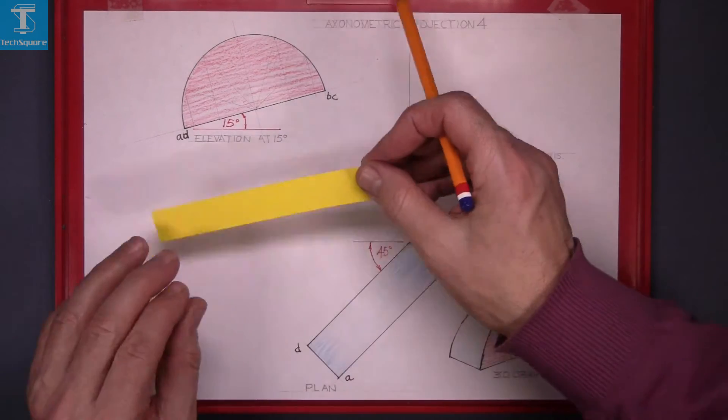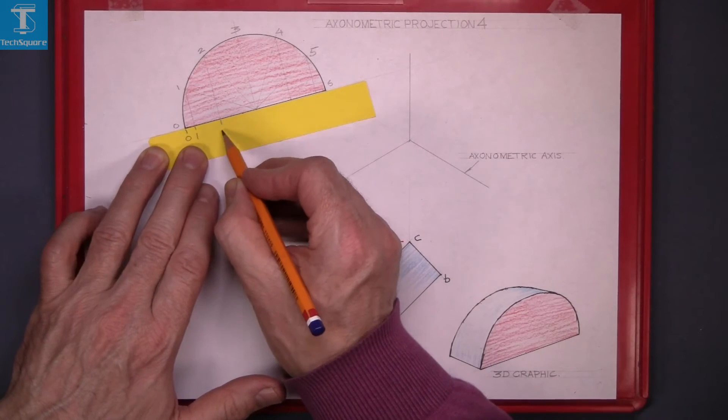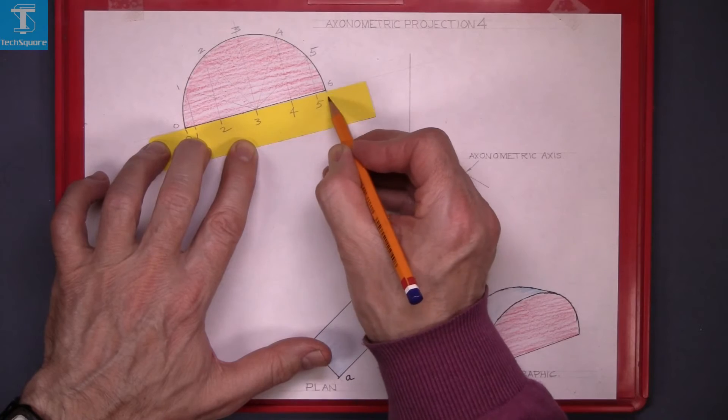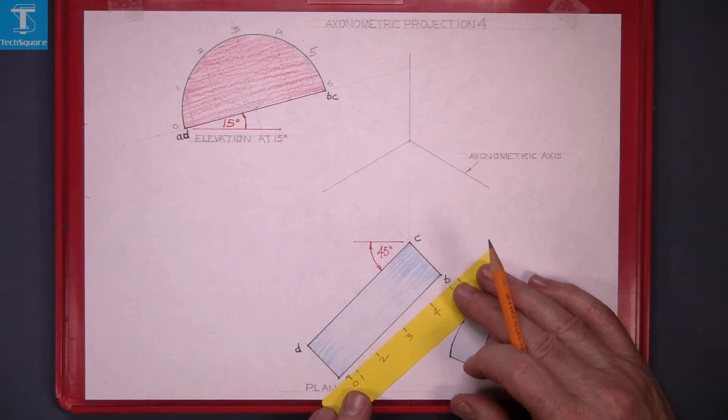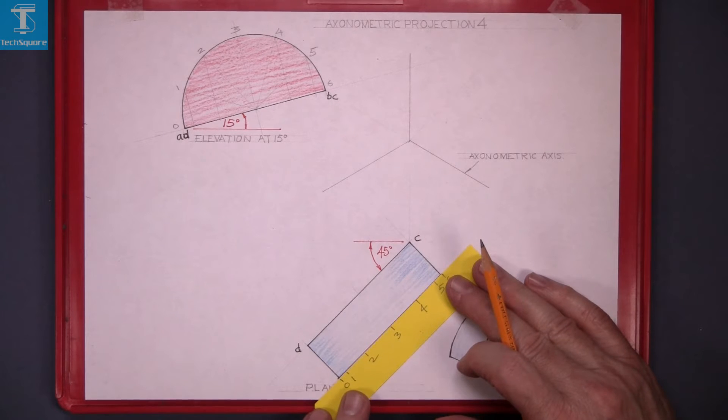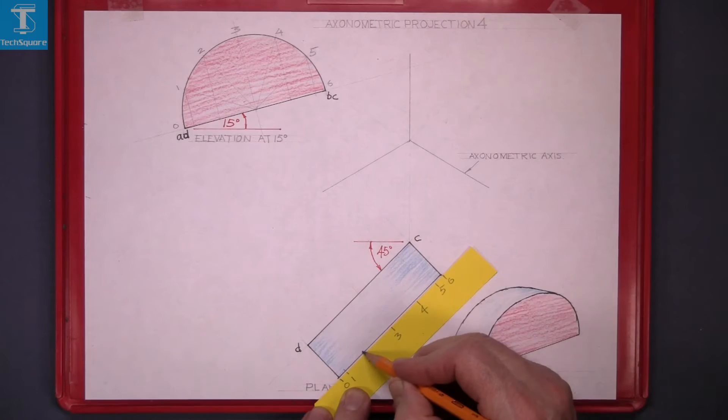Using a piece of paper as a template, transfer these points onto the template and index them, and now transfer them onto your plan. Mark each point and number them.